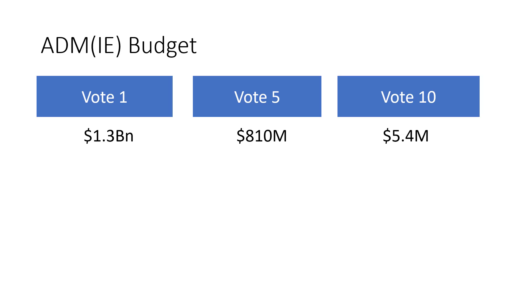Now, of those funds, we've spent approximately $227 million in Vote 1 salaries and $3.6 million in Vote 5 salaries. That's salary money we have to pay to manage and do the construction projects.